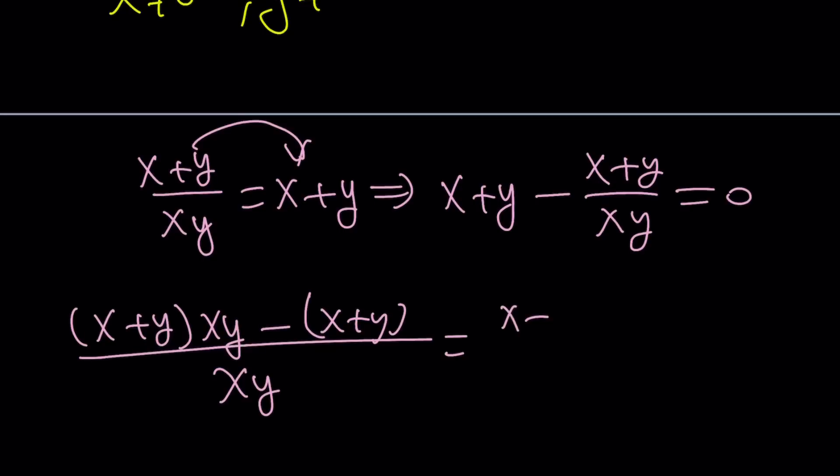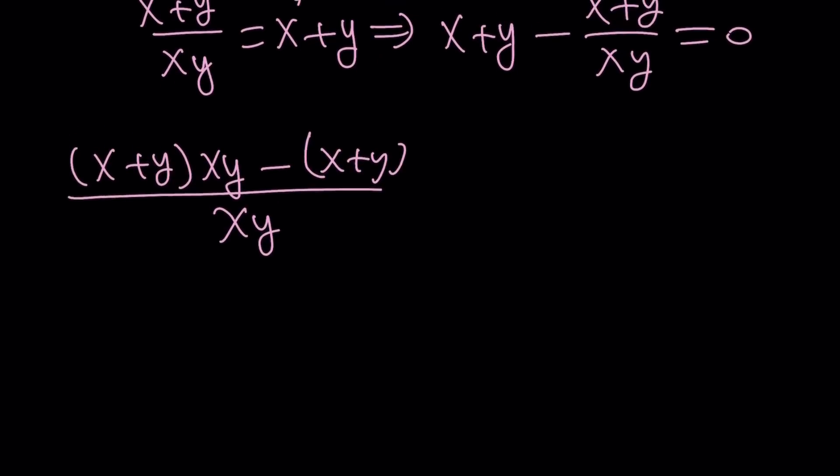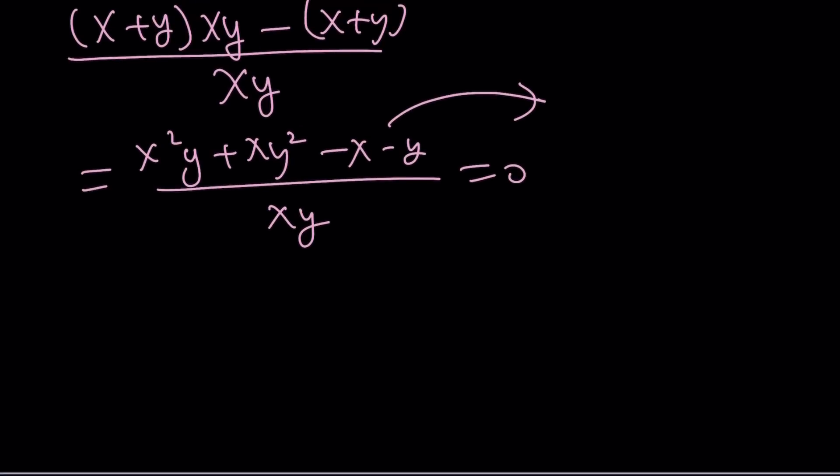Now we can make a common denominator. (x+y) multiply by xy minus (x+y) divided by xy equals 0. You can distribute: x²y + xy² - x - y over xy, and this equals 0. So the top should be 0, giving us x²y + xy² - x - y = 0. This seems helpful, but guess what?